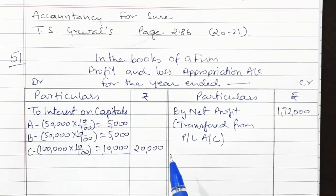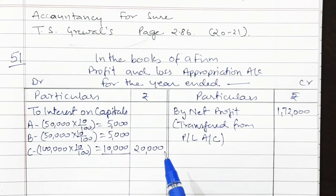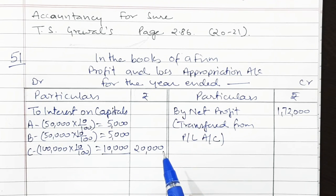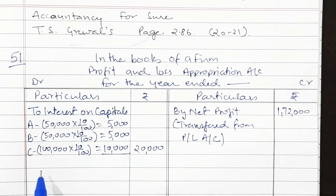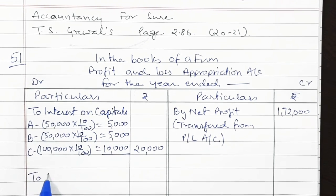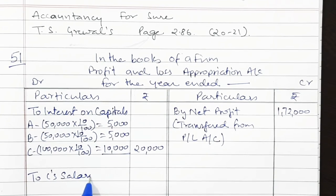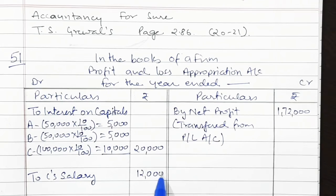Rs. 20,000 as interest on capital. The question also says that C being the working partner was entitled to a salary of Rs. 12,000 per annum.